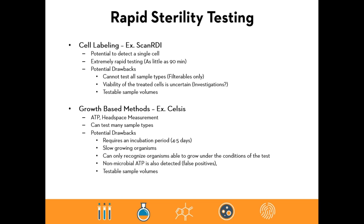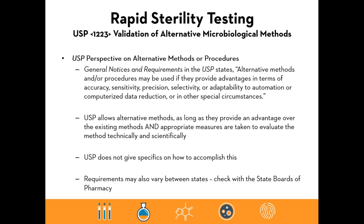The USP perspective on alternative methods is governed by USP 1223, validation of alternative microbiological methods. USP recognizes that alternative methods can be used if they provide an advantage over the compendial test and have been given rigorous scrutiny as to their equivalence and suitability. They must provide an advantage, and appropriate technical and scientific measures must be taken to evaluate the method — that's your method suitability and demonstrated equivalence. Requirements can also vary between state boards of pharmacy, so it's important to check with them before deciding a non-compendial sterility method is appropriate.